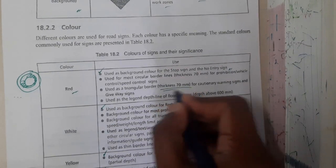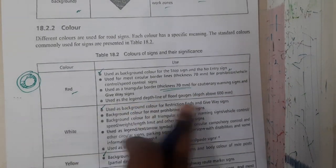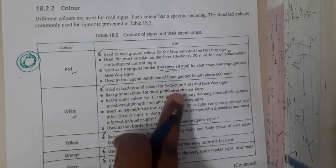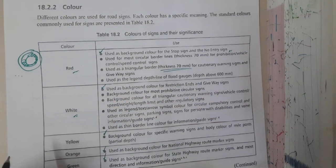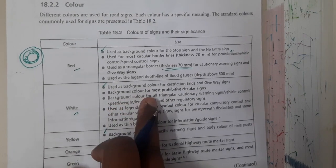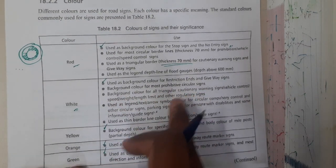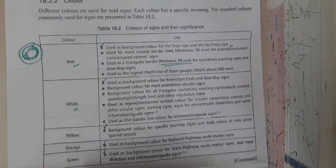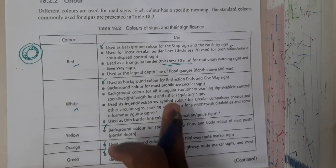Similarly, white color is used for restriction end and give away signs. It is a background color for most prohibitory circular signs. Basically, for any circular sign, even now I showed for the speed, we used red as a strip and white as a background.